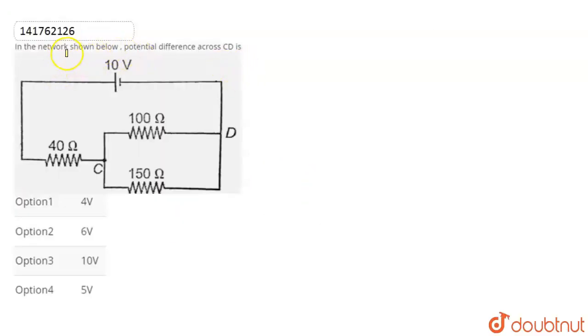So in this question, we have a network shown below. We have to determine the potential difference across the CD. So this is the point C and here we have the point D.